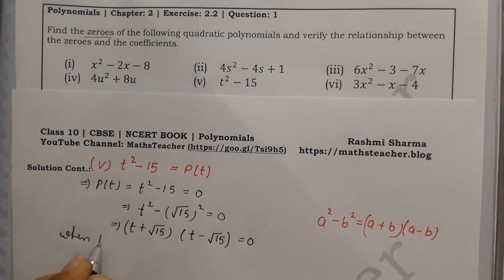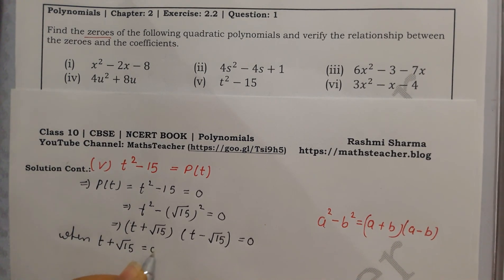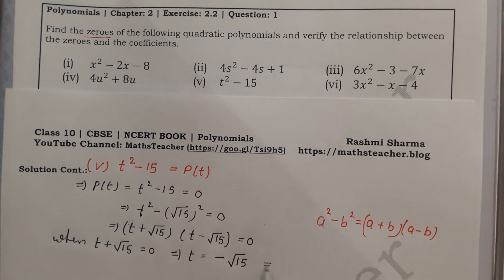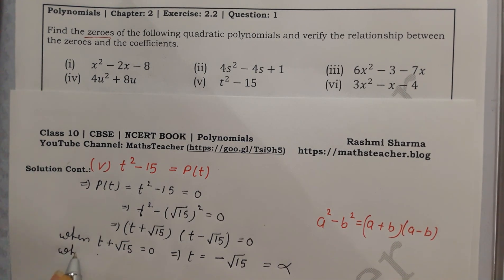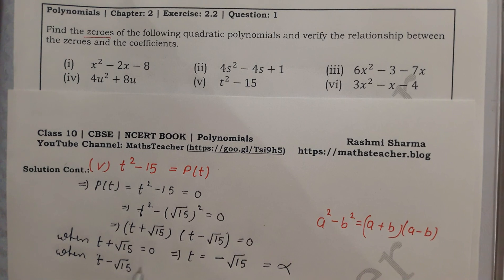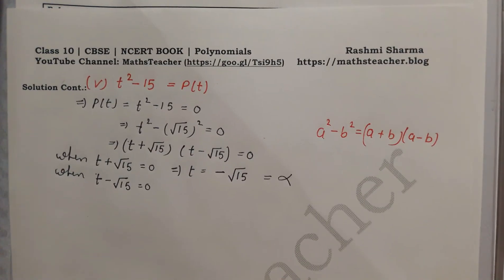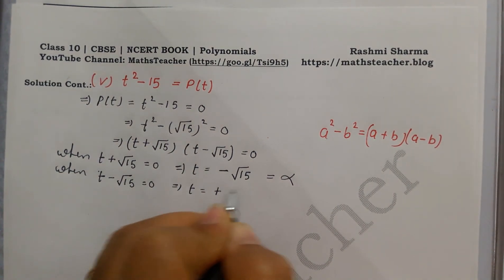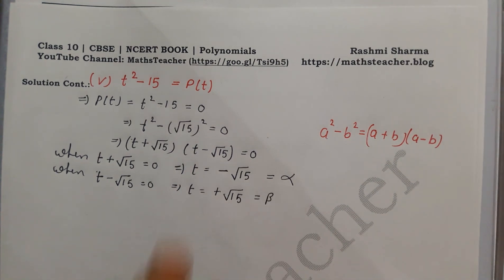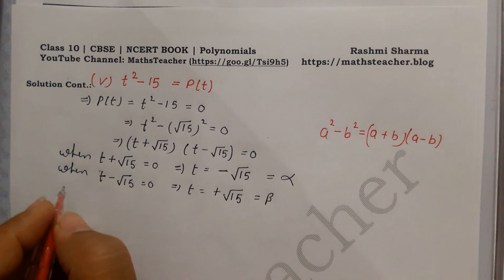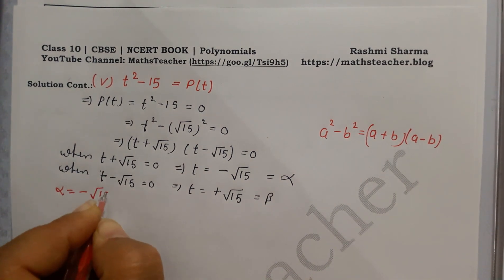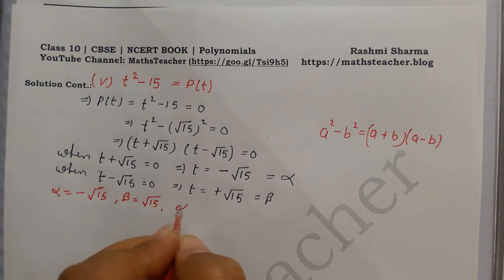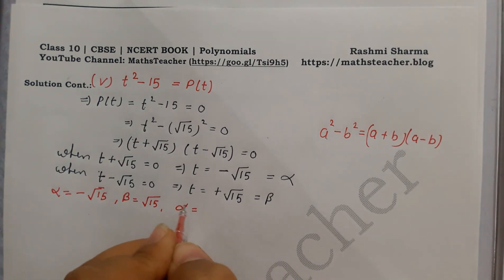When t plus under root 15 equals 0, this implies t equals minus under root 15. When t minus under root 15 equals 0, this implies t equals plus under root 15. So alpha equals minus under root 15 and beta equals plus under root 15. Now we verify the relations. Here a equals 1.